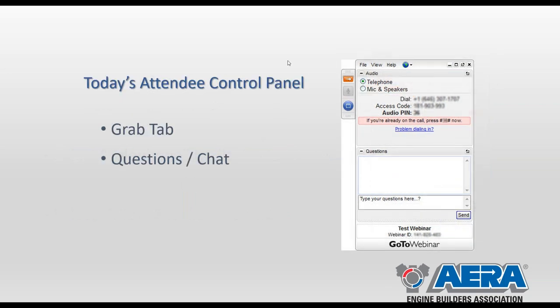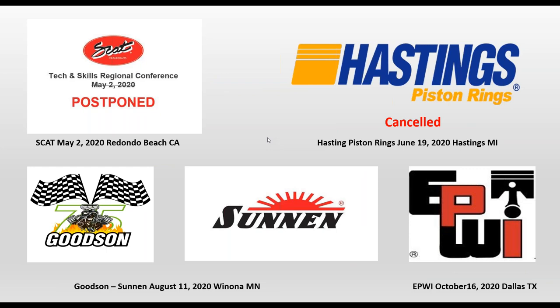There is an orange box with an arrow in it — this is your grab tab. This allows you to collapse and expand your control panel during the presentation. This comes in handy when you're watching; you can be in full screen mode and then if you have any questions, you can pop that back open and ask them. That takes us to the questions box. If at any point you have any questions or comments, go ahead and put those in this box. Rob and I will be in the background looking at those and we'll do a Q&A at the end with the folks from Line to Line.